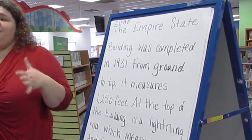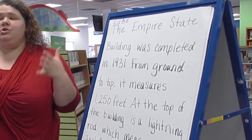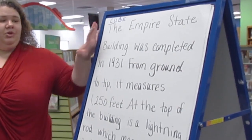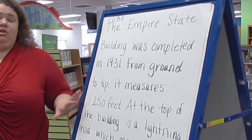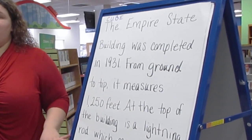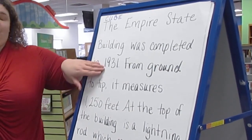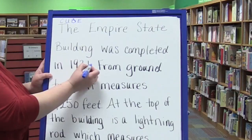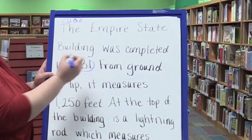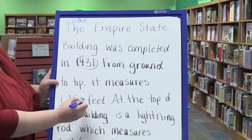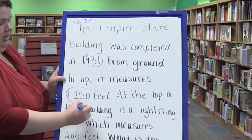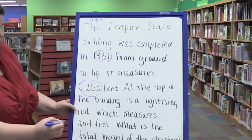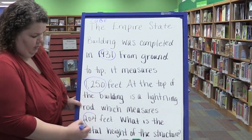The very first step is C — circle the numbers. I'm going to look through this and look for any numbers both in numerical and word form. So I see 1931, 1250, and 204.